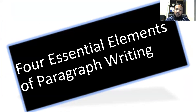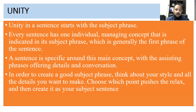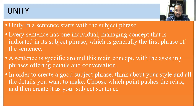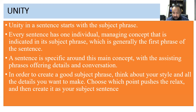Four essential elements of paragraph writing — this is the backbone of writing. Unity: unity in a sentence starts with a subject phrase. Every sentence has one individual managing concept indicated in its subject phrase, which is generally the first phrase of the sentence. A sentence is built around this main concept, with supporting phrases offering details. To create a good subject phrase, think about your topic and the details you want to make, then choose the point that best represents it and create it as your subject sentence.